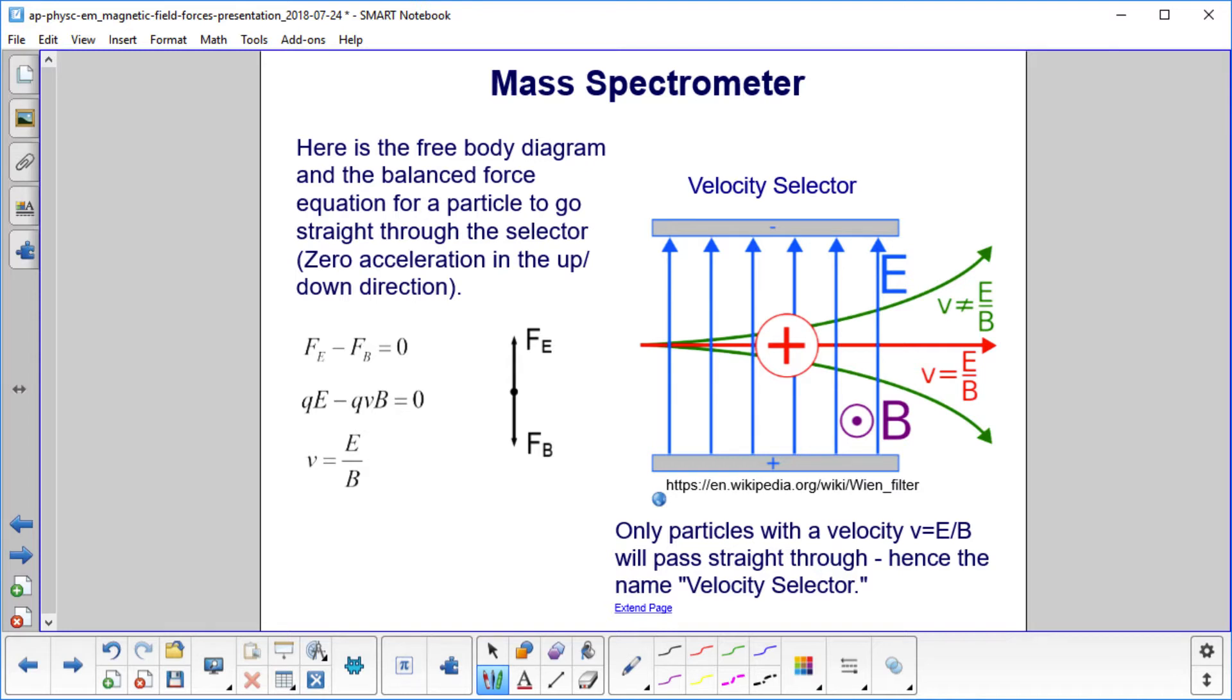So let's see what the forces are. For a positive charge, the electric field will push it up to the top, so we'll call that positive, so that's Fe. Now, to balance that, we need a magnetic field pushing down.